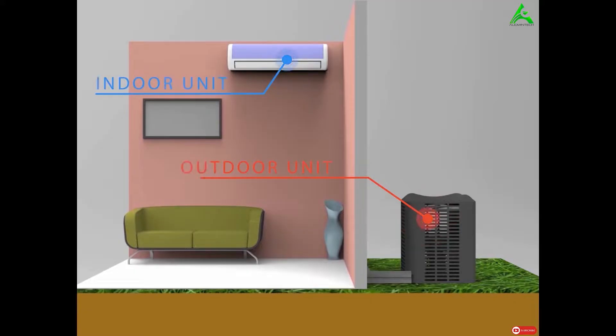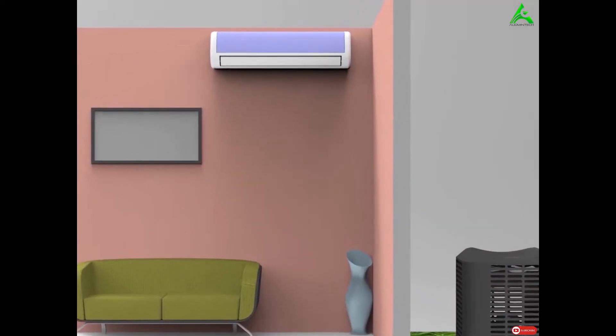A split air conditioner has an indoor unit and an outdoor unit. As the name suggests, the indoor unit is placed inside the conditioned space.